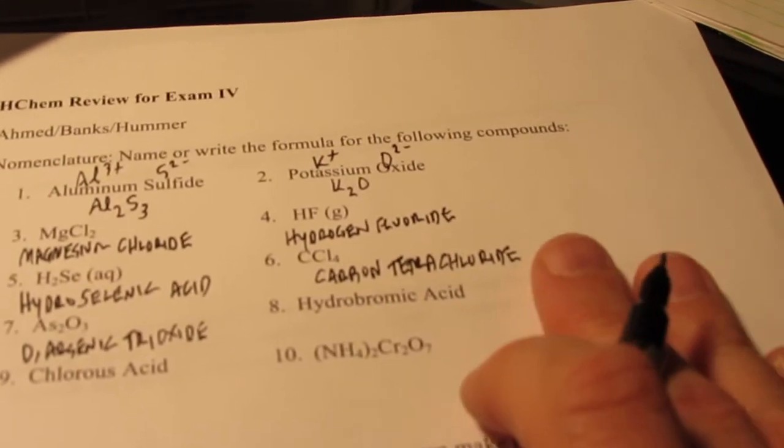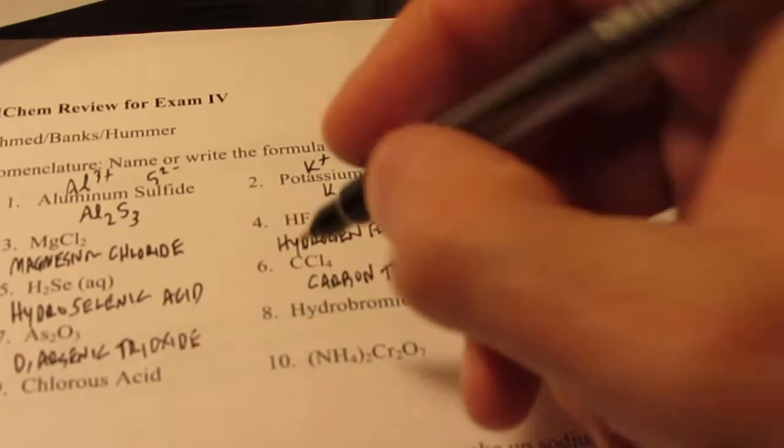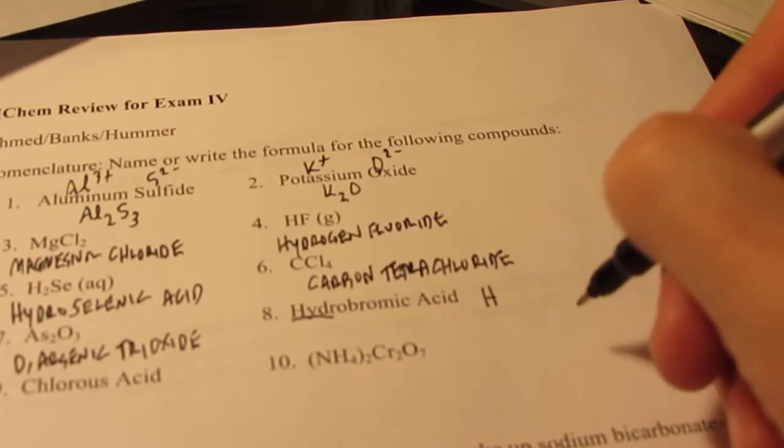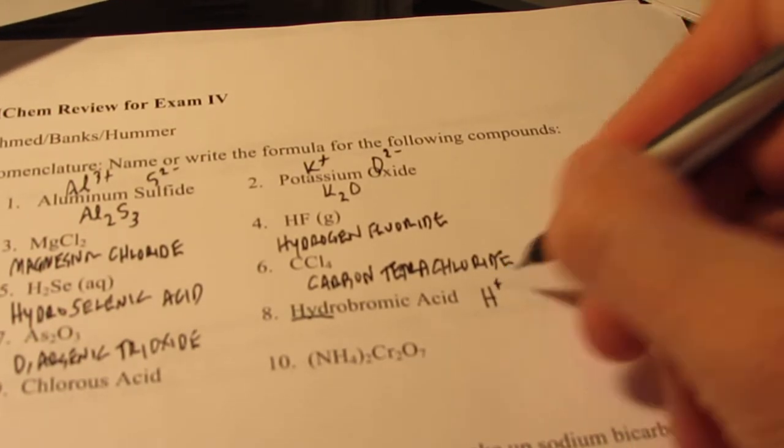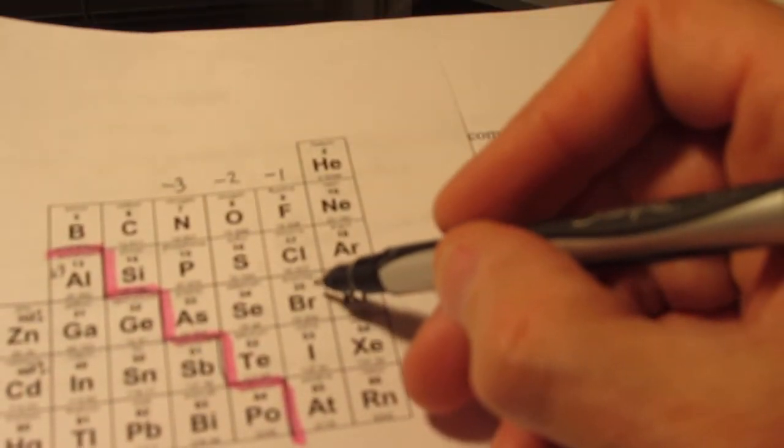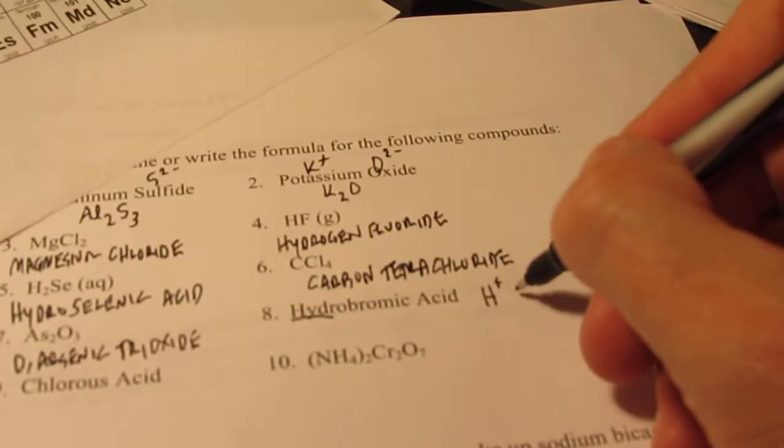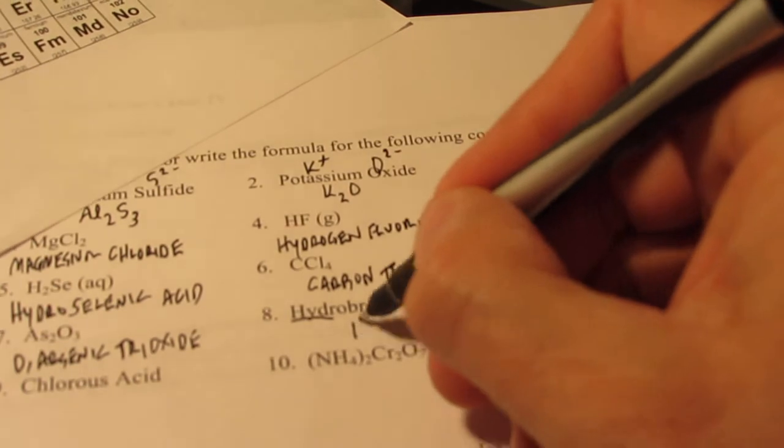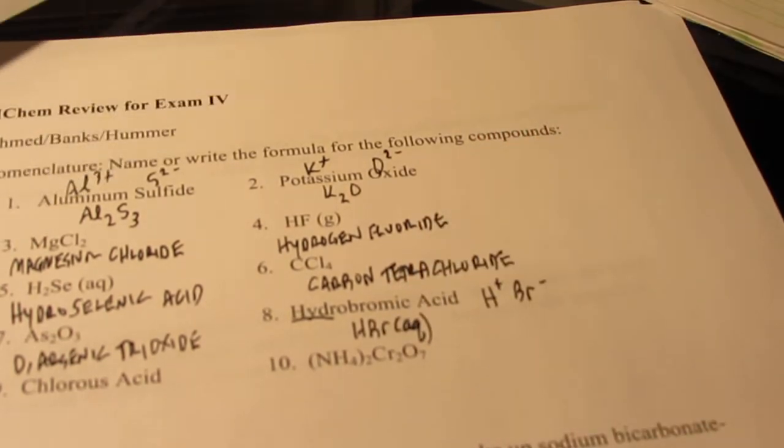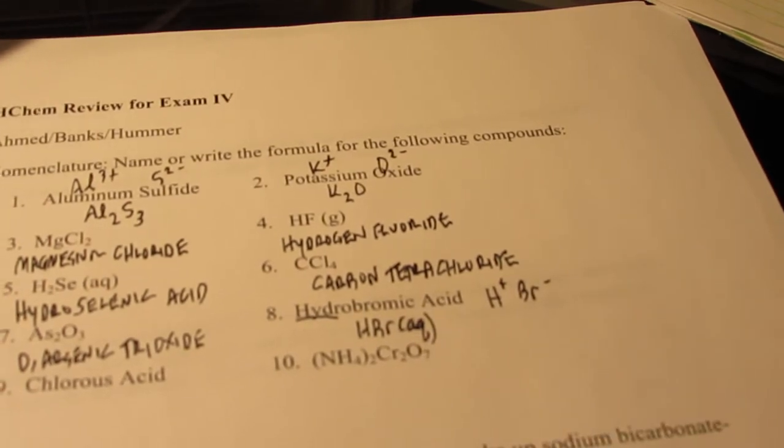Number eight, hydrobromic acid. You know that this acid only has two elements in it, because it starts with hydro. And of course, one element's going to be hydrogen, and it's going to act like a metal with a positive one charge. And bromic comes from bromine. Bromine has 35 electrons, wants to get to 36 like krypton, so it's going to add one, so Br negative. So HBr, we'll put an AQ after it. Binary acids only exist when they're dissolved in water. And AQ means aqueous or dissolved in water.